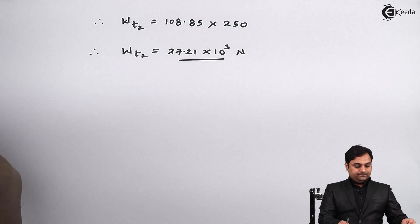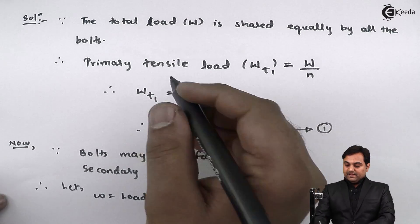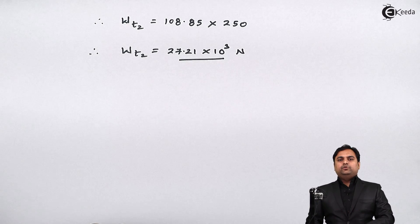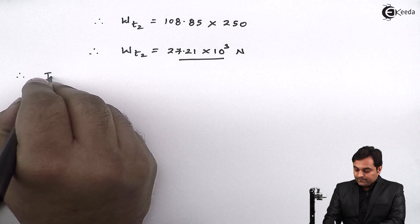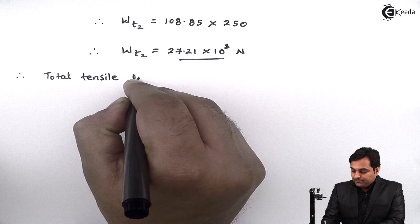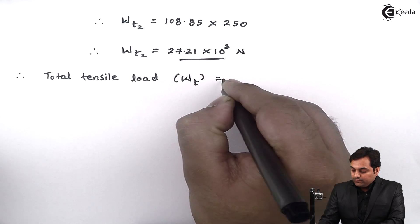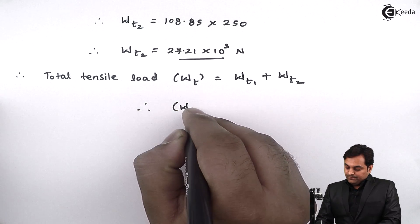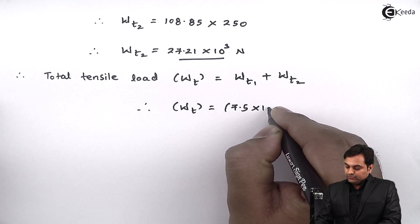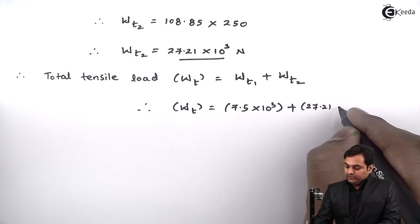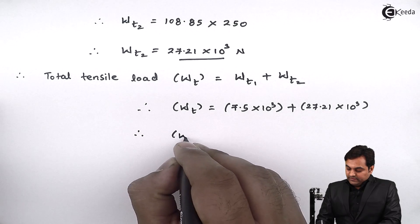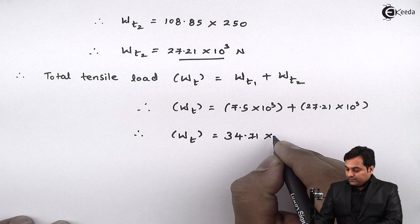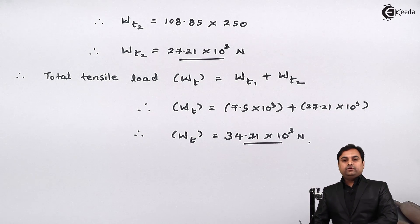From equation 1, the primary tensile load was 7.5×10³ Newton, and from equation 2, the secondary tensile load is 27.21×10³ Newton. We can add both values to get the total tensile load. Therefore, total tensile load W_T = W_T1 + W_T2 = 7.5×10³ + 27.21×10³ = 34.71×10³ Newton.